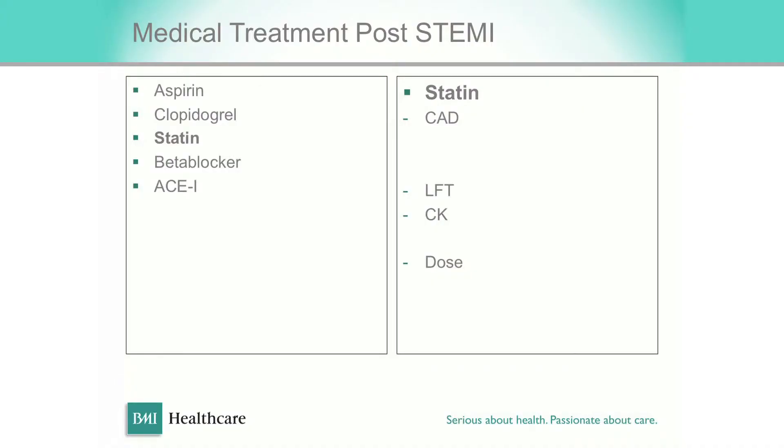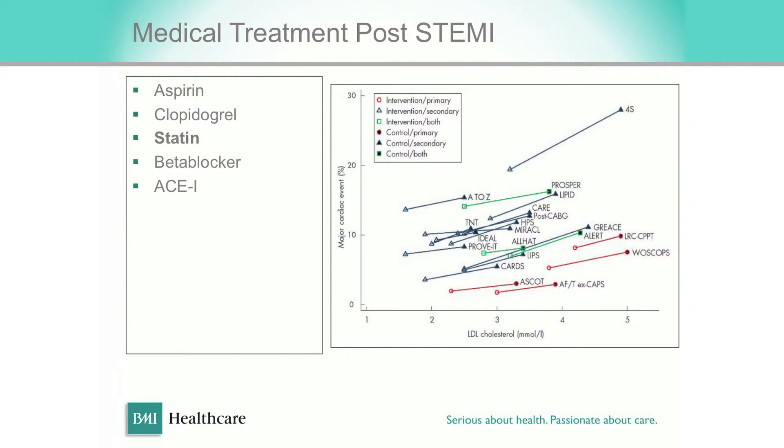We routinely give high-dose statins to people presenting with acute coronary syndromes — 80 milligrams of atorvastatin. However, you would certainly want to check liver function tests in the more elderly age group, and you probably wouldn't want to give atorvastatin 80mg upfront to a 90-year-old. The important thing is to get them on a statin rather than a specific statin at a particular dose. Pravastatin 40mg once daily, simvastatin 40mg once daily, or atorvastatin 10, 20, or 40mg once daily are all going to be beneficial.